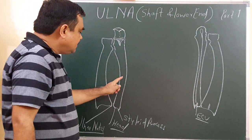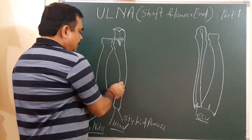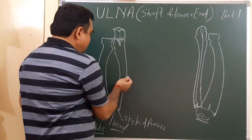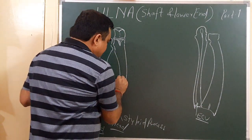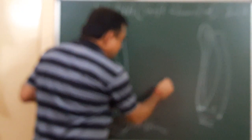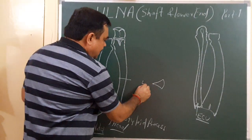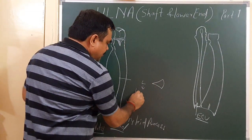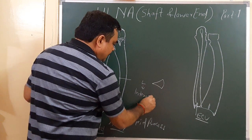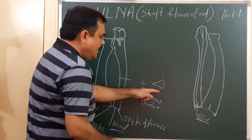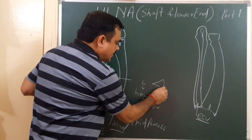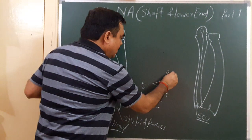Now we'll discuss the shaft of the ulna — this is the right-hand side. If you cut a cross-section at this level, you'll find it is like this. This border is the lateral border, also known as the interosseous border. Here is the anterior border and this is the posterior border.